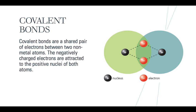Just as a quick reminder, covalent bonds are a shared pair of electrons between two non-metal atoms. The negatively charged electrons are attracted to the positive nuclei of both atoms. As we can see in this diagram, our positive nuclei in black with a white plus sign are attracted to the electrons of their own atom and the electrons of the other atom in this bond.